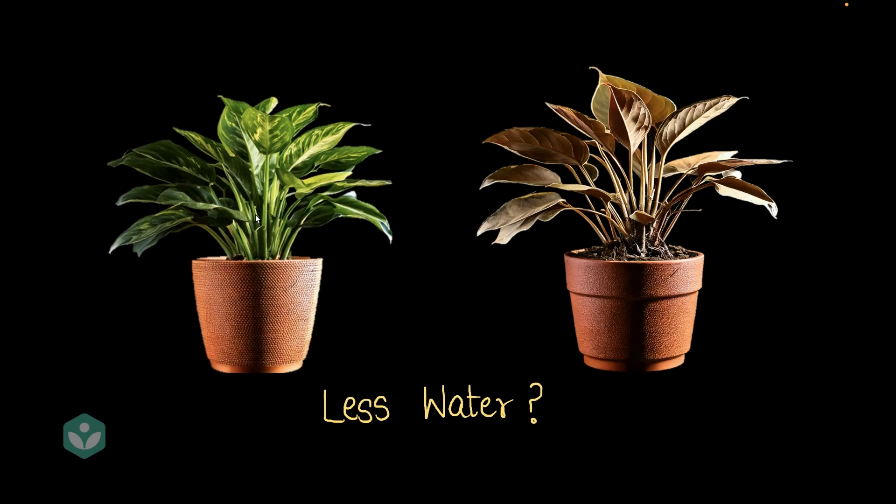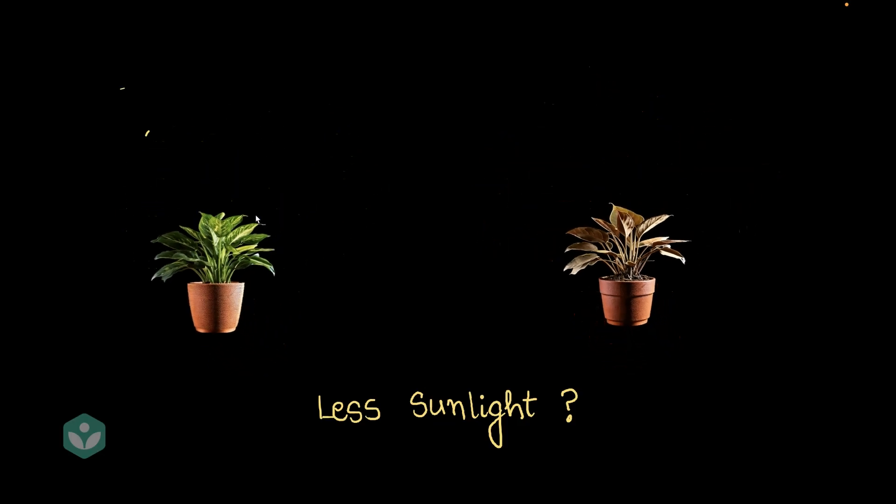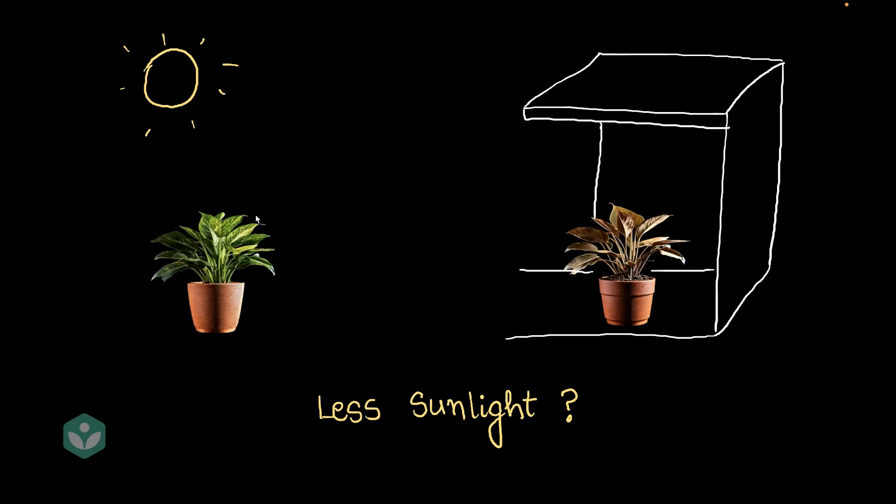And then he came up with the third guess, could it be less sunlight? And he wondered. He knew that one plant was kept in sunlight and the other plant was kept inside a small shed with a small light bulb. So, Arpit wondered, could this be the reason for why this plant wasn't surviving too well? And he decided now to get to the bottom of things and make a conclusion and to make a conclusion he decided to test this guess.